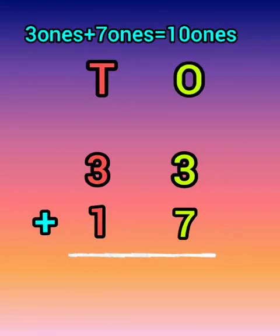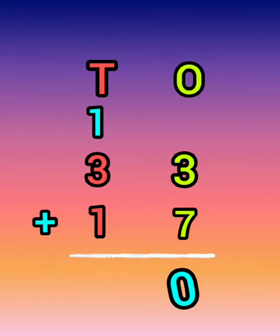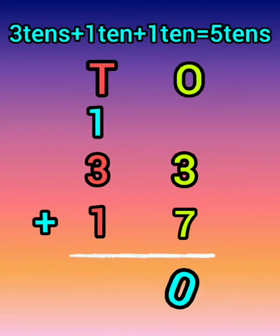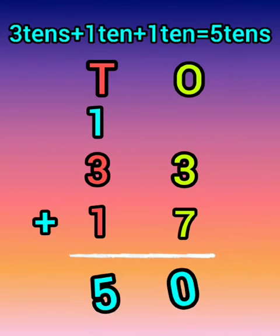In that, 0 ones and 1 ten. Write the 0 in the ones column and write the 1 ten in the tens column. Now add 3 tens plus 1 ten, and don't forget to add 1 ten you carried. Now the answer is 5 tens.